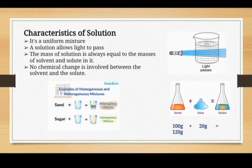In the second diagram on the right side, you can see a beaker containing an orange-colored solvent plus a blue-colored solute, which together equal a solution. You can add the solute into the solvent beaker and mix it well to make a solution. The mass of the solution is always equal to the masses of the solvent and solute combined.